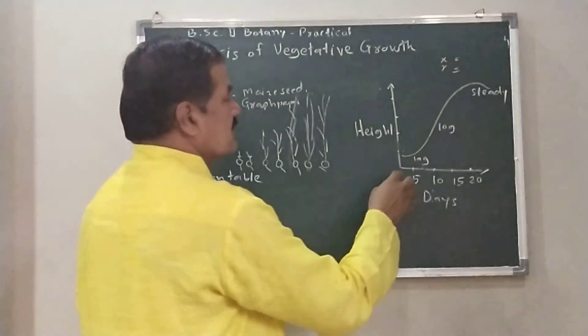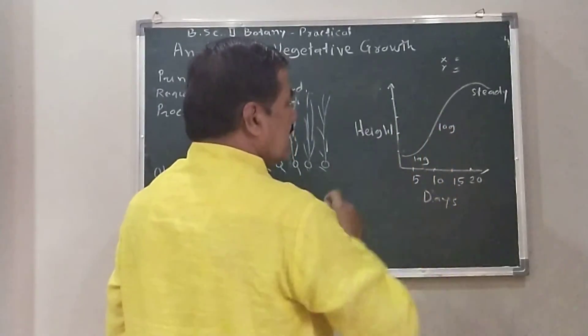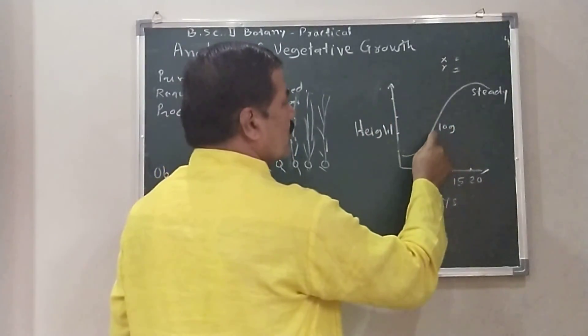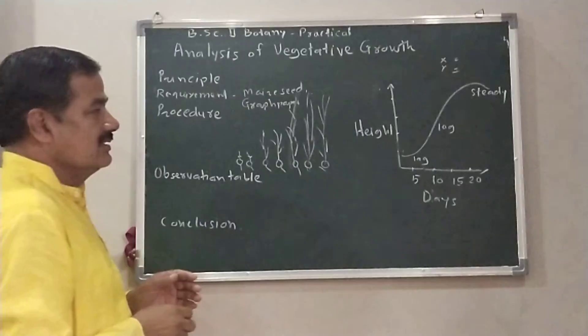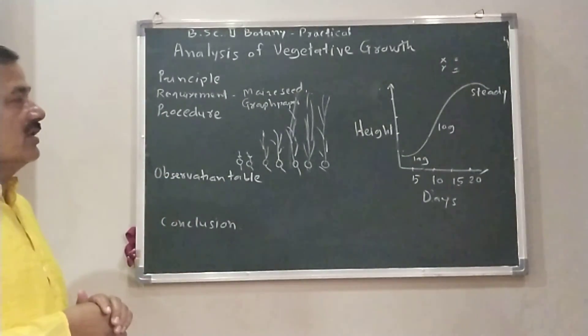Initially, growth is slow - it is cell division. Then, cell elongation - faster growth. And steady stage - cell maturation. That is the S-shaped growth curve.